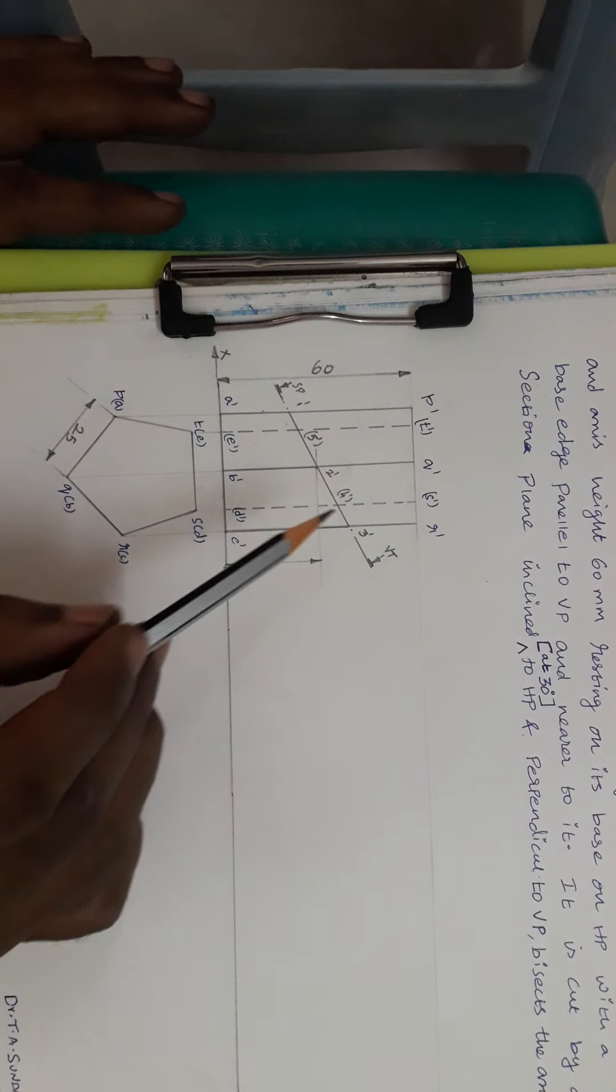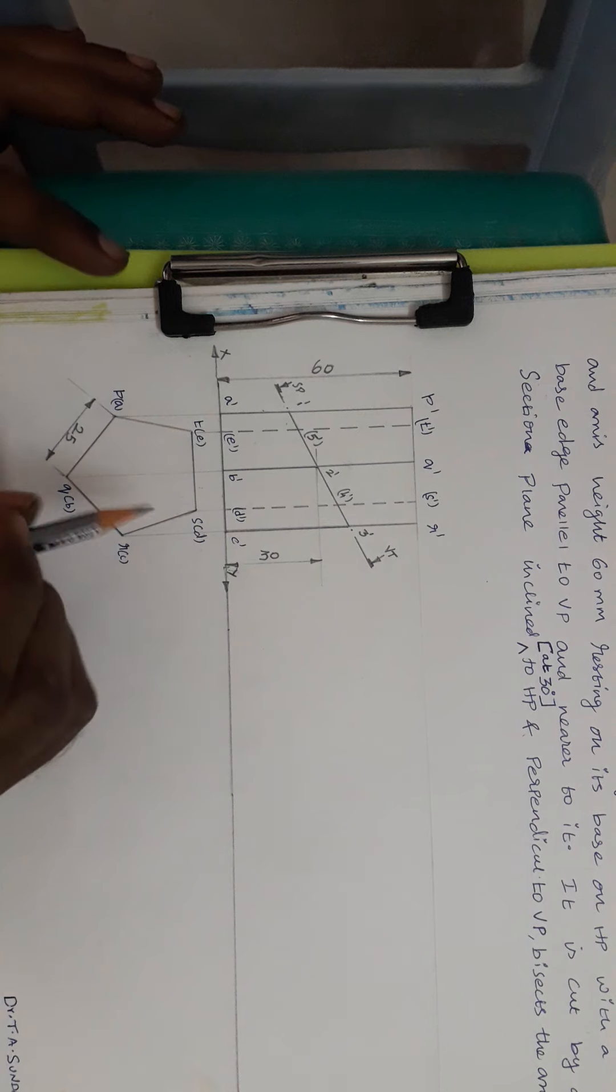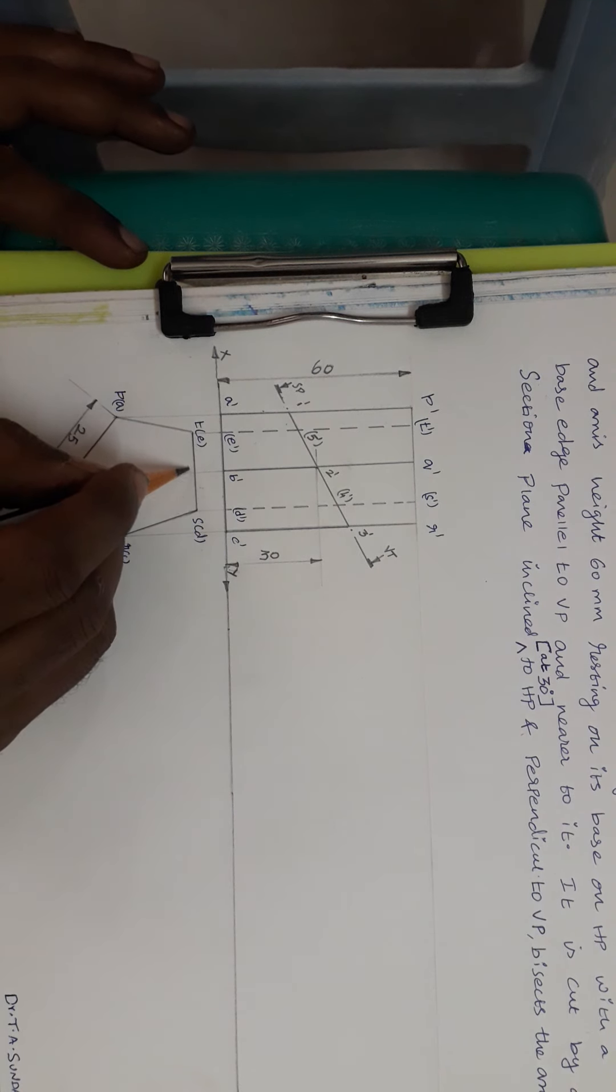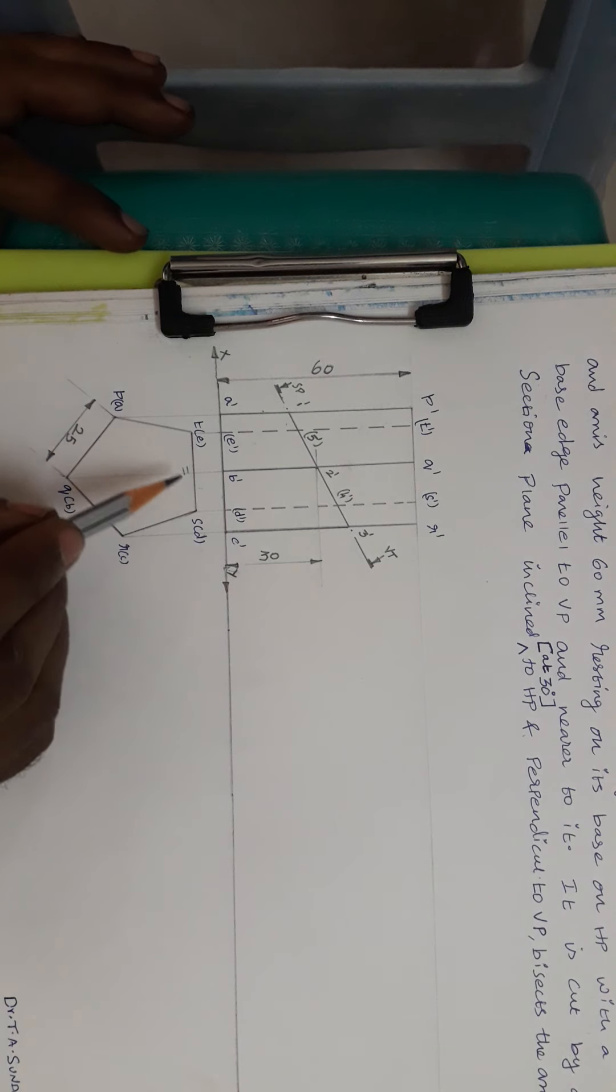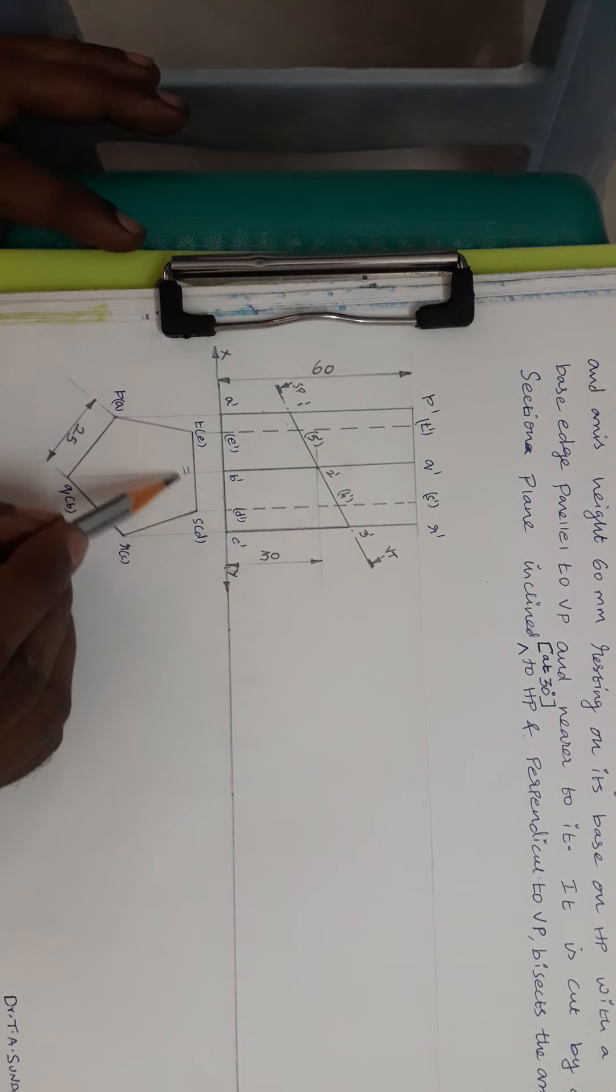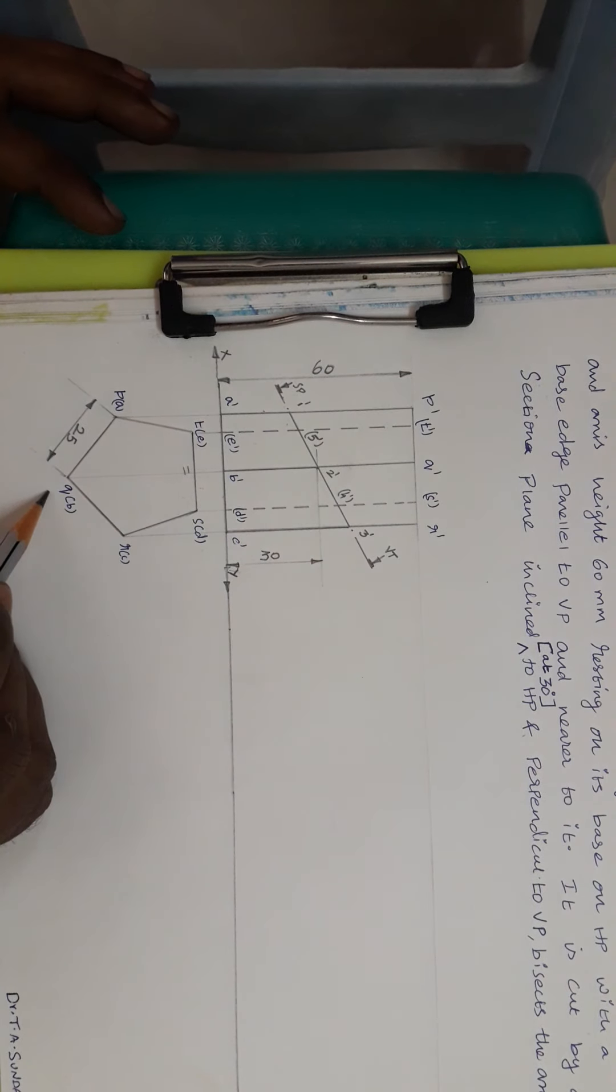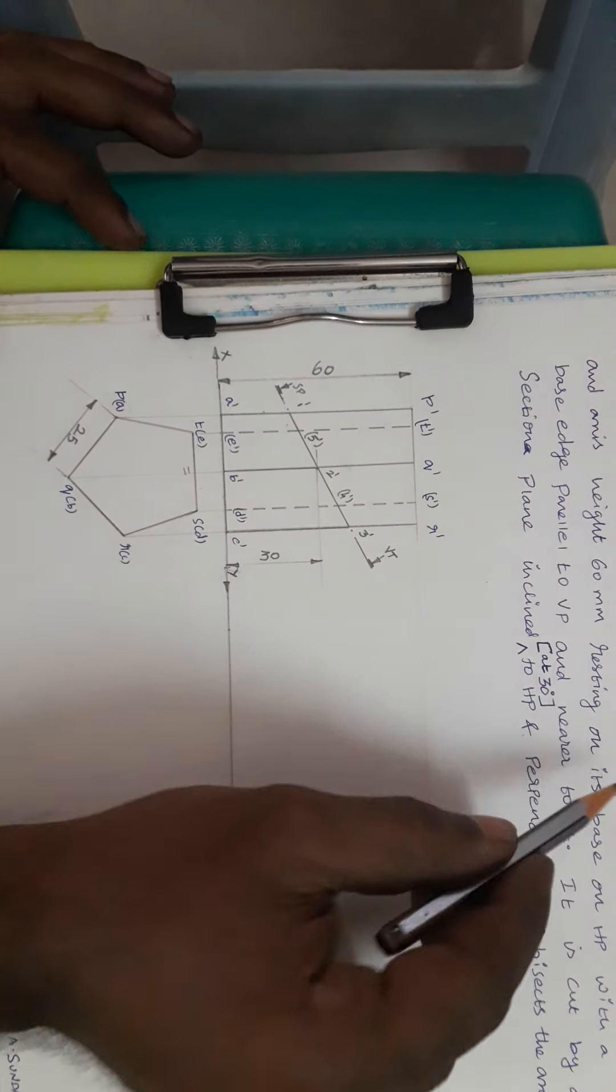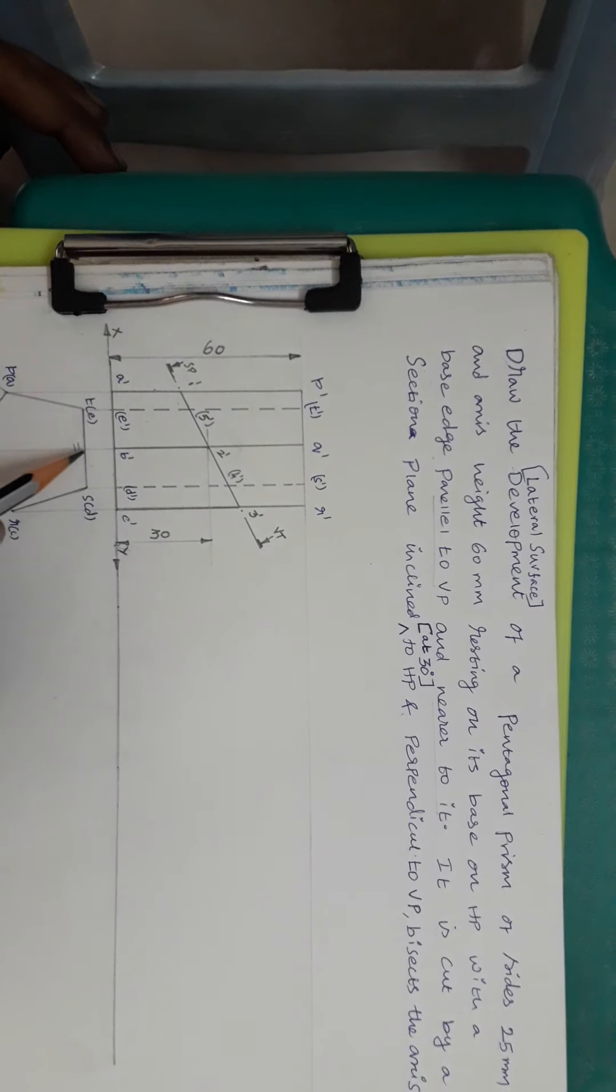I have drawn the development for the pentagonal prism resting on its base on HP with one of its base edge parallel to and near to VP. This is an important condition. We have to be very careful in drawing this one. If we draw it perpendicular that is also wrong. It is given as one of the base edge parallel to VP and nearer to it. So this is the correct thing.